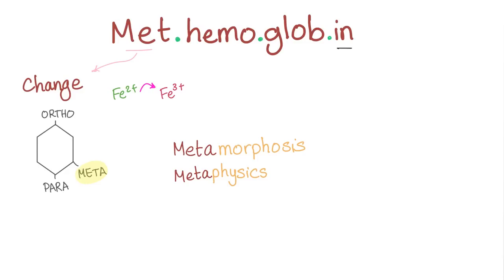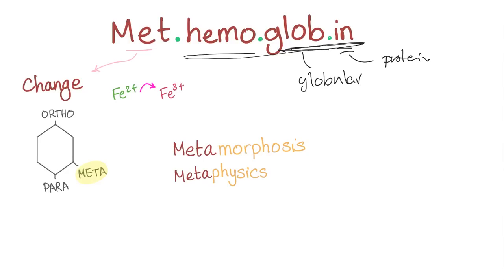I love etymology. Methemoglobin — let's break it down. 'IN' means protein. 'Globe' means globular, so globular protein is called globin. Hemoglobin is the heme-containing globin. 'Meth' means change — if you remember organic chemistry, 'meta' refers to a different position, as in metamorphosis and metaphysics. That's why methemoglobin is a changed hemoglobin: instead of ferrous, now we have ferric.